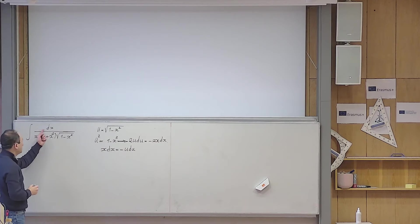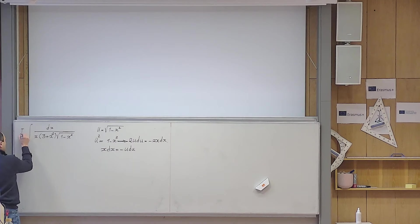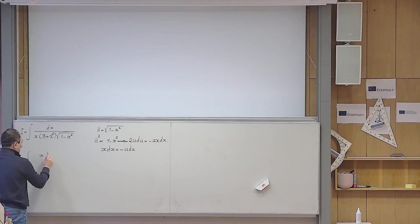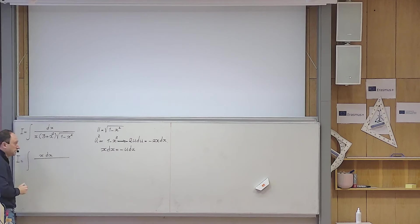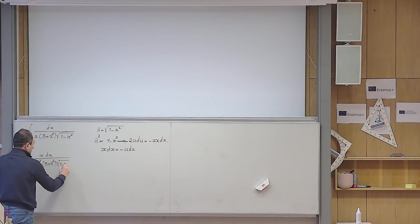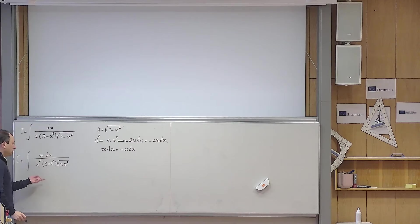But I do not have the combination x dx in the integrand. So it motivates me — let me call this integral I — it motivates me to multiply the numerator and the denominator by x to make up the combination that I need. So this becomes x dx over x squared times 3 plus x squared times square root of 1 minus x squared.